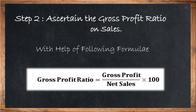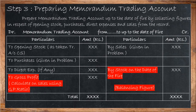Step 2: Ascertain the gross profit ratio on sales. With the help of the following formula: gross profit ratio is equal to gross profit divided by net sales, multiplied by 100. After preparing the trading account and finding the gross profit range, we will open the memorandum trading account.